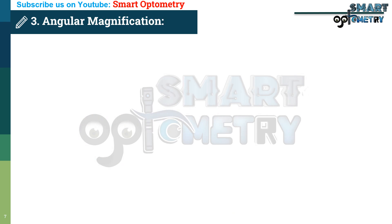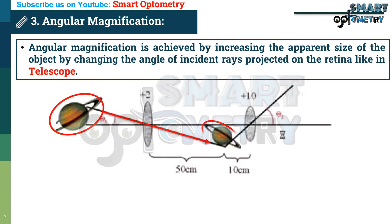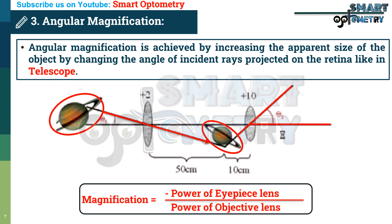Angular magnification is achieved by increasing the apparent size of the object by changing the angle of incident rays projected on the retina, like in a telescope. The image formed by the first lens is magnified by the second lens by increasing the angle of incident rays. The formula for magnification in a telescope is: magnification = minus power of the eyepiece lens divided by power of the objective lens.